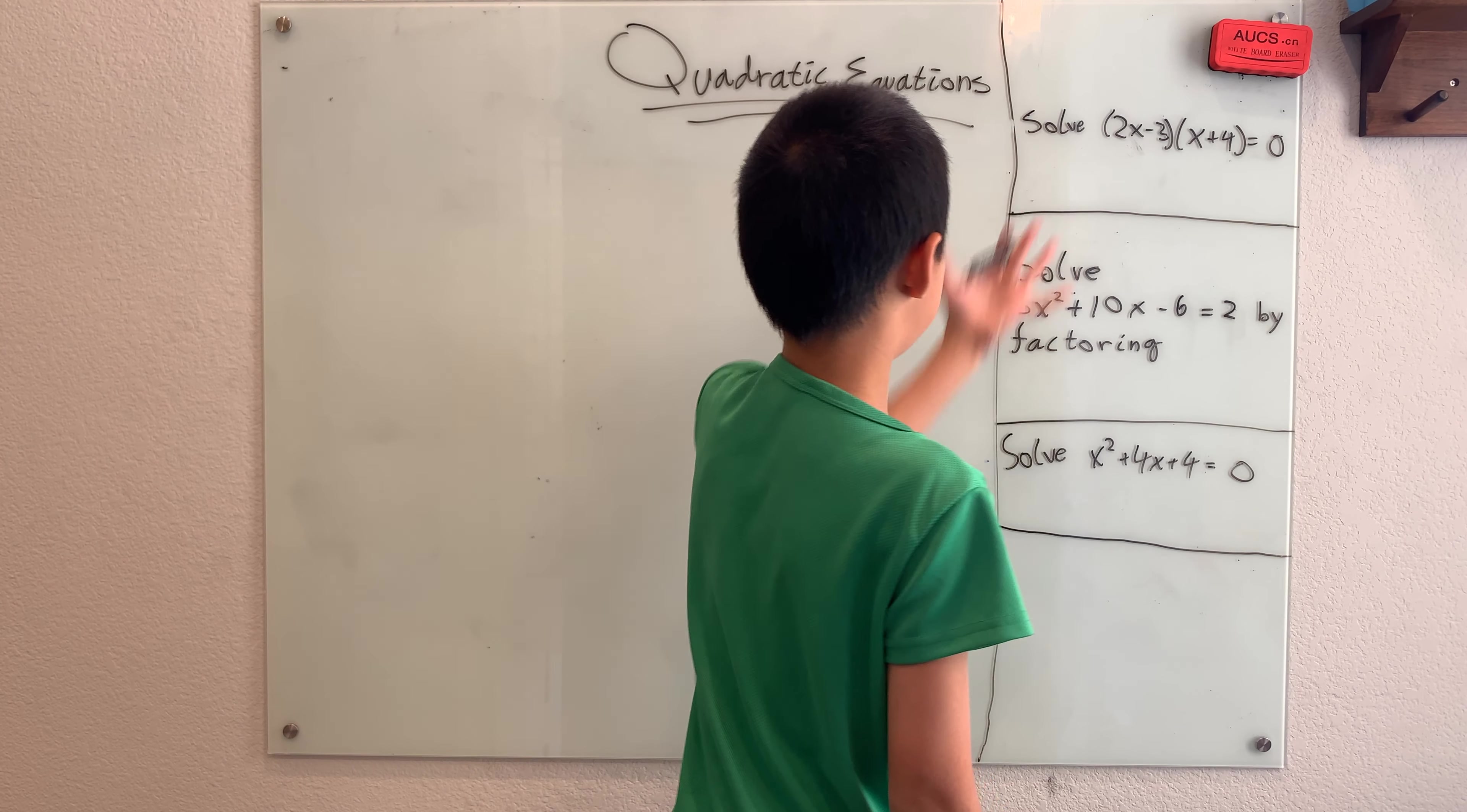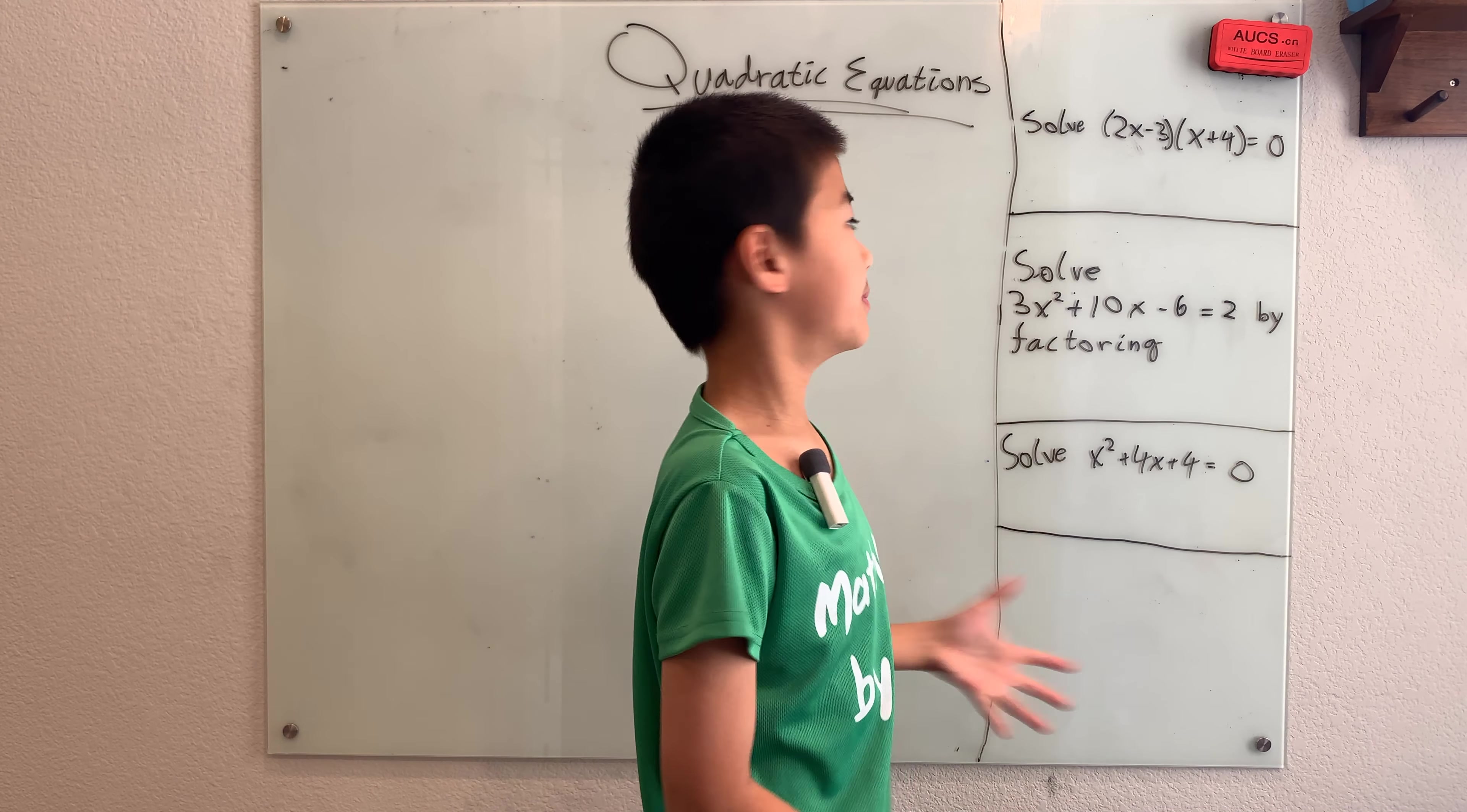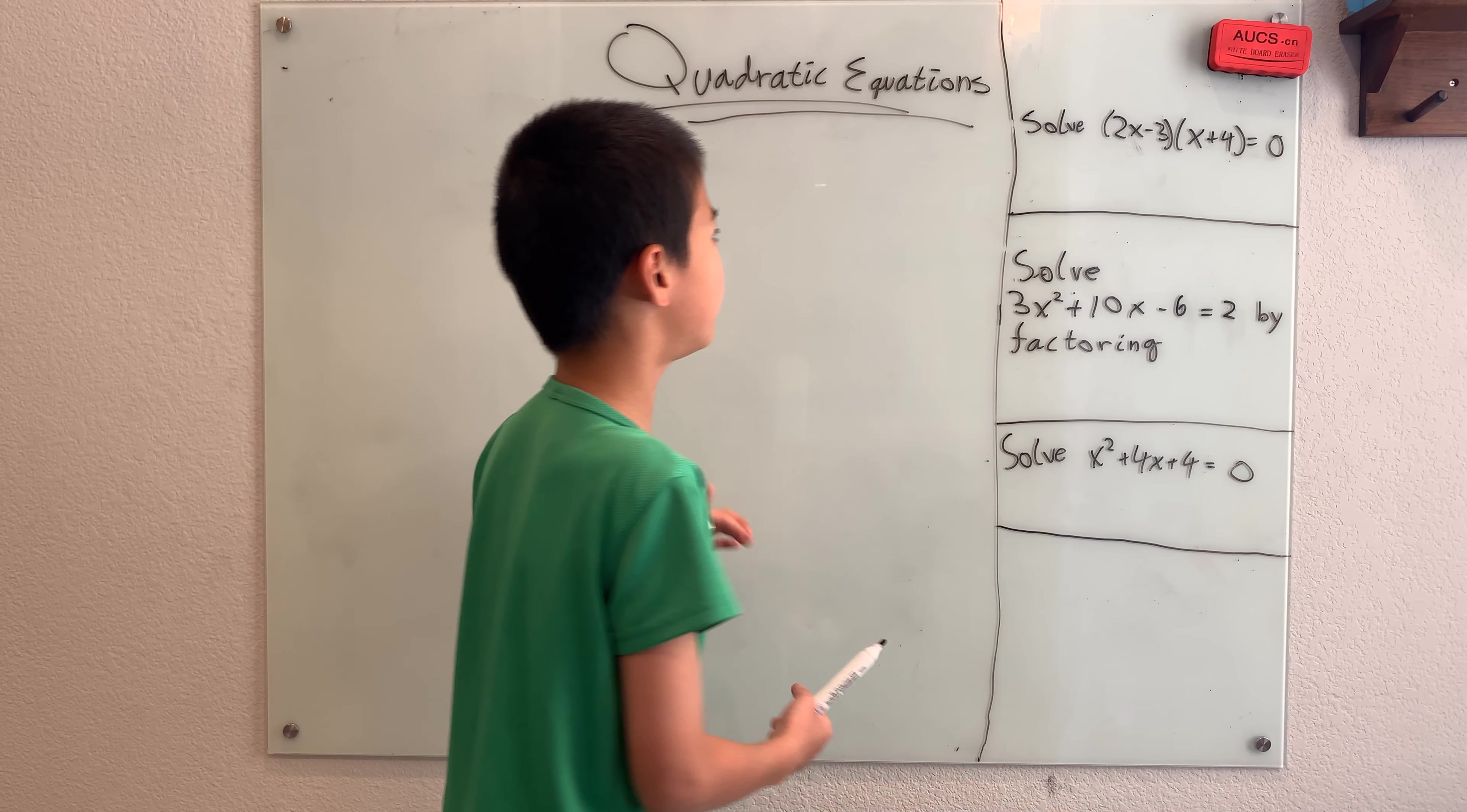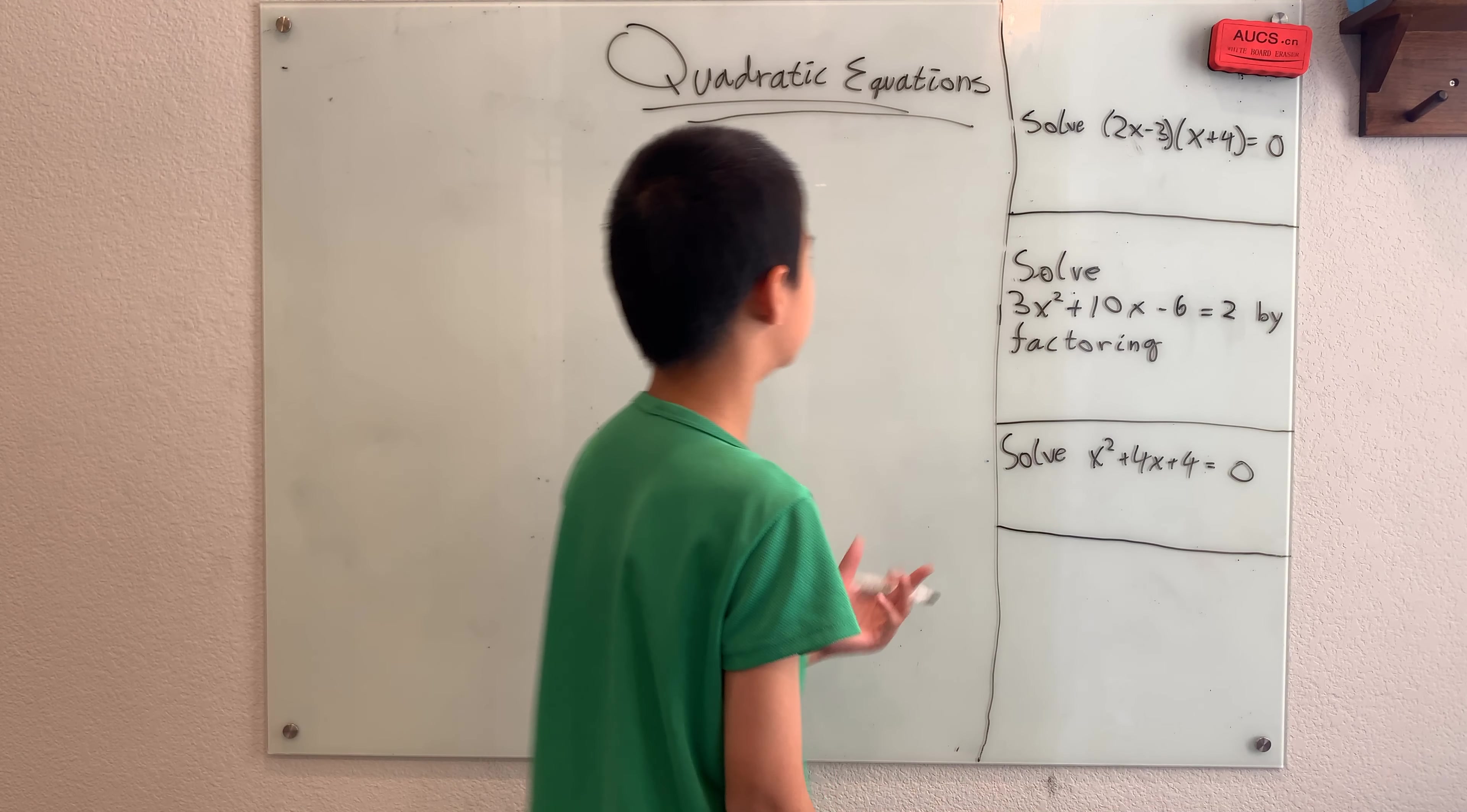Now, this is actually pretty simple to solve, right? Because the zero property of multiplication states that if something times something else is 0, no matter how many somethings you have, at least one of them has to be 0 to have the product be equal to 0.